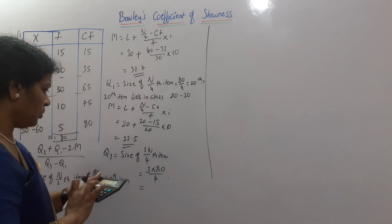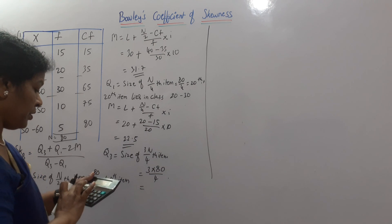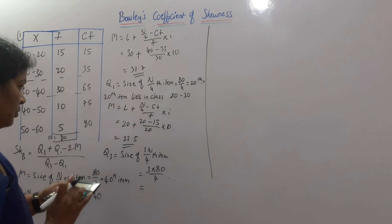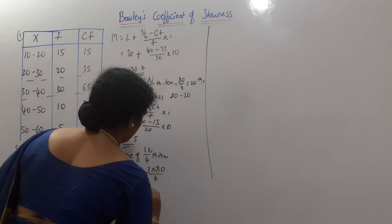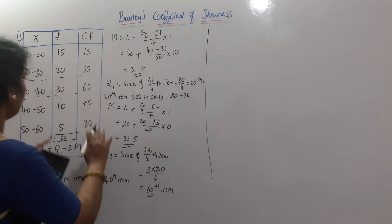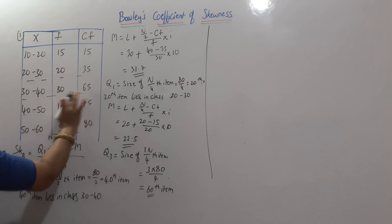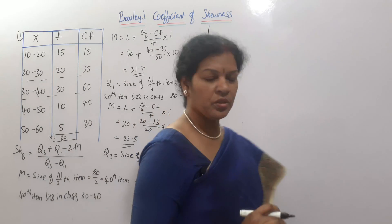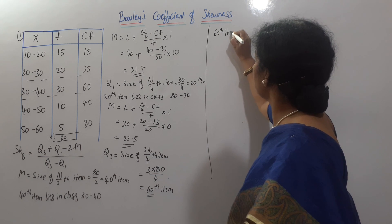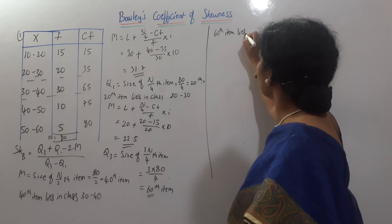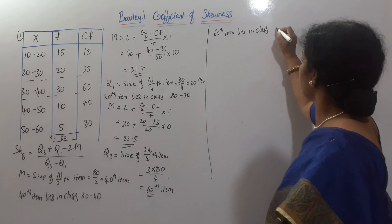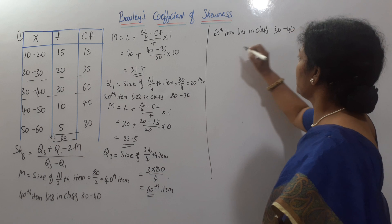80, 80 by 4. 240, no? 80 into 3 divided by 4. 60. 60th item. Where does it lie 60th item? We will see. 60th item lies here only, same one. So, 60th item, we can write one sentence here. 60th item lies in class 30 to 40 only. 30 to 40.